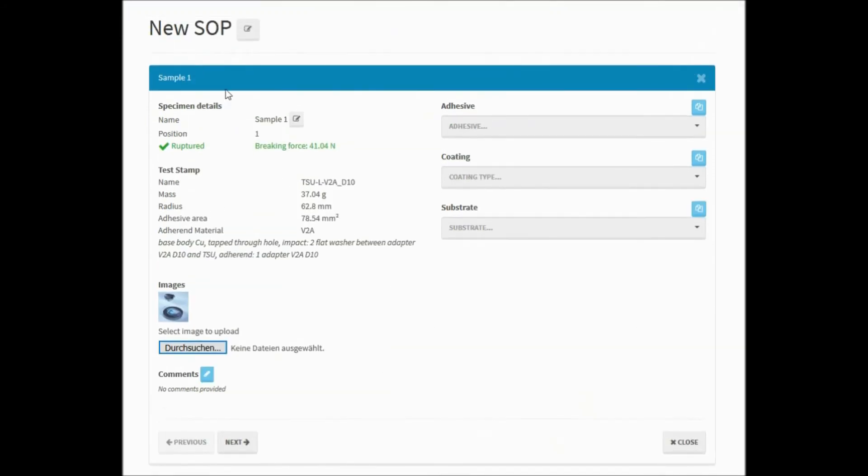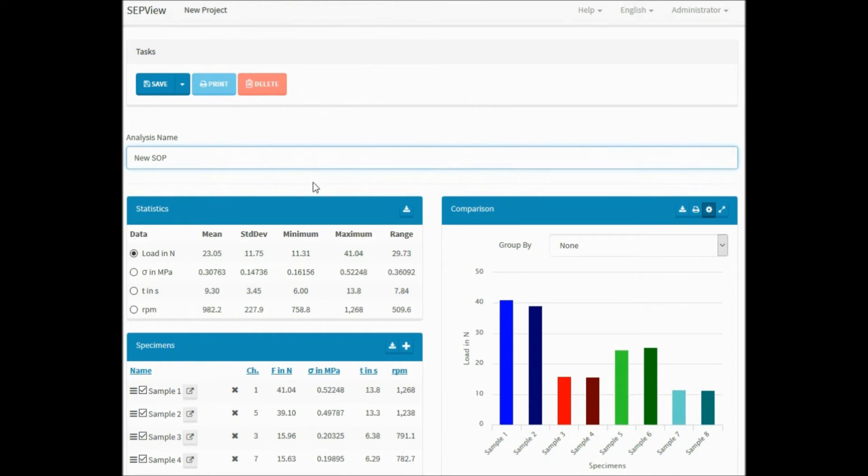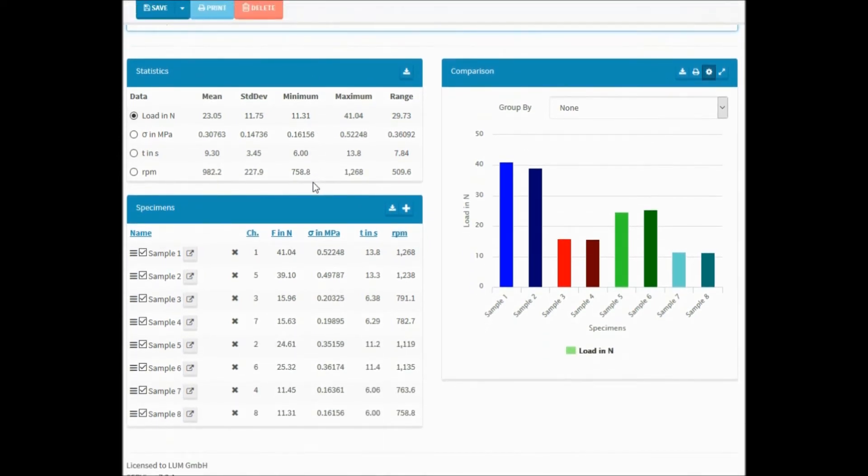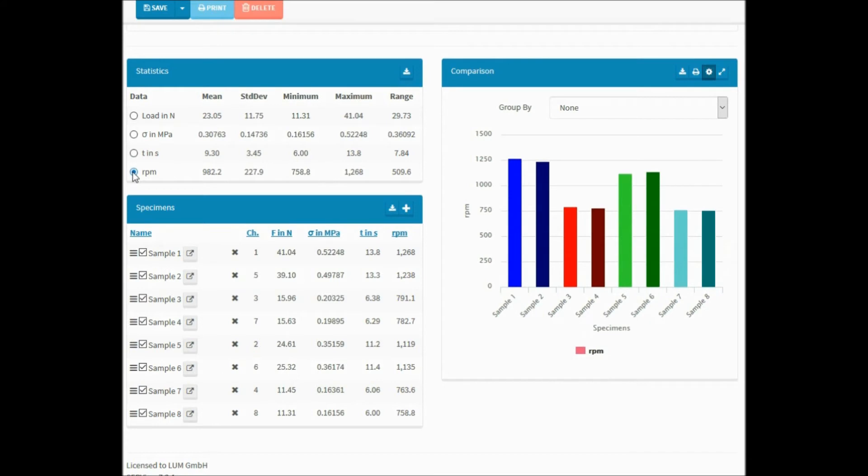By clicking the Analyze button, a new analysis window for the measurement is opened. The results for every specimen are shown numerically and in diagrams. The Statistics box allows choosing between breaking force, strength, measurement time or RPM as values for the graph shown in the Comparison box.